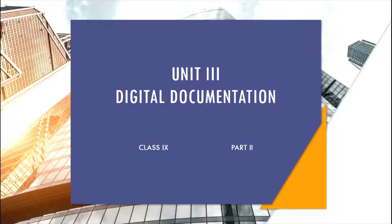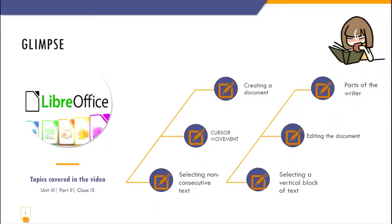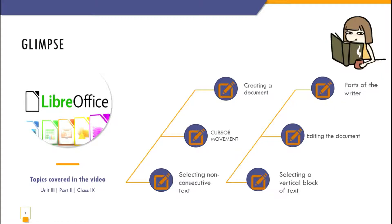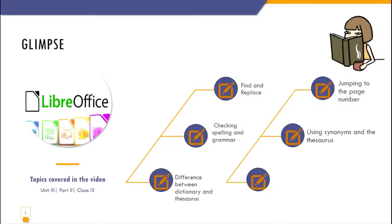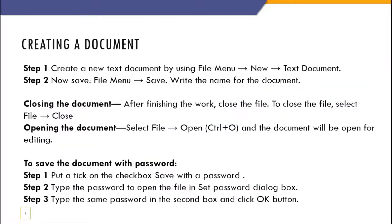Hi, dear children of class 9th. This video is Part 2 of Unit 3: Digital Documentation. The topics we have covered in this video are: creating a document, parts of Writer, cursor movement, editing the document, selecting non-consecutive text, selecting a vertical block of text, find and replace, jumping to a page number, checking spelling and grammar, using synonyms and thesaurus, and the difference between dictionary and thesaurus.